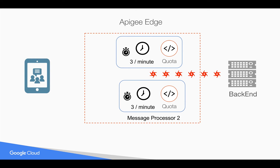That is the reason six calls went to the backend. If there are more message processors handling the load and you say three per minute without the distributed and synchronous elements in the XML policy, even more calls will reach the target server than the three per minute you specified. So how do we solve this problem if you want an exact three per minute quota for a particular developer or client?